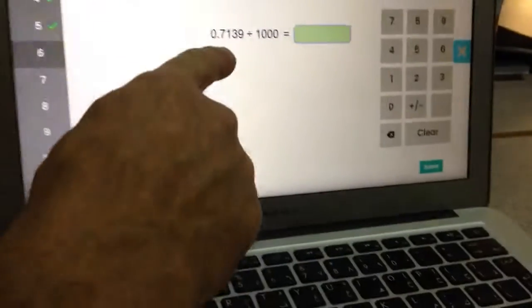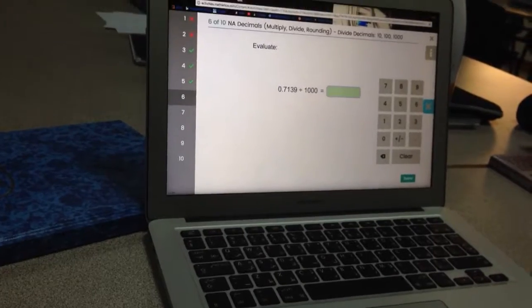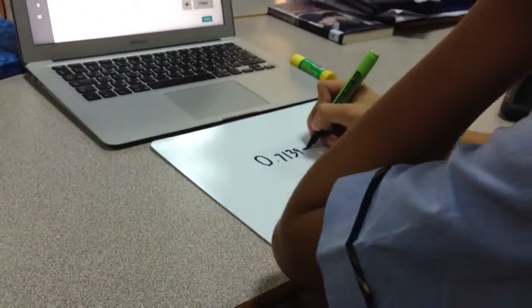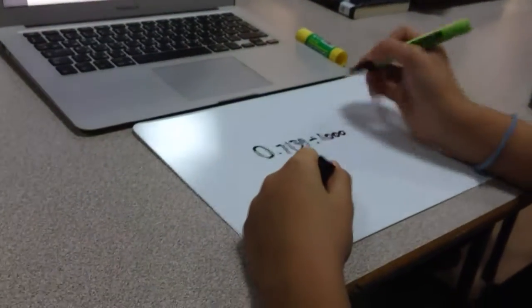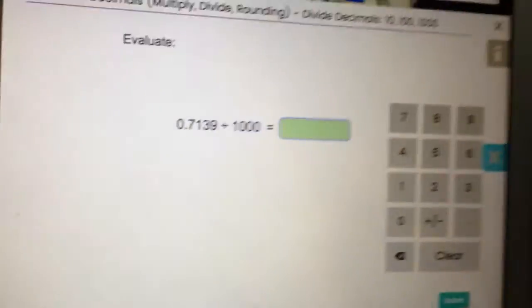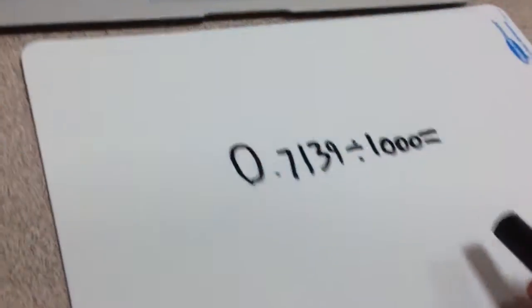Just write that one exactly like this. Okay, zero, 1,000. So now what I want you to do is how many zeros are in that thousand? So what are we going to do with this decimal?